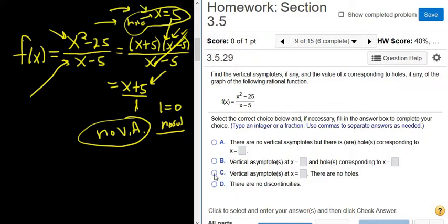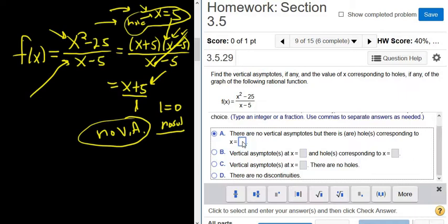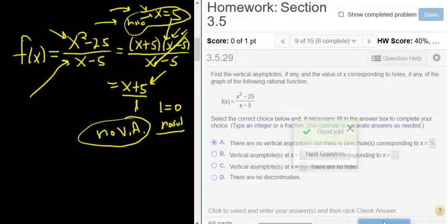Let me go ahead and type it in. So let's see. There's no vertical asymptote, but there is a hole corresponding to x equals 5. Let's try this one here. See if it works. Yep, that's it.